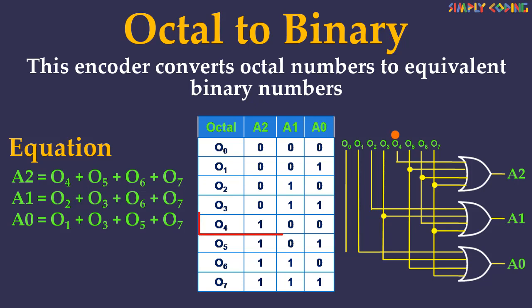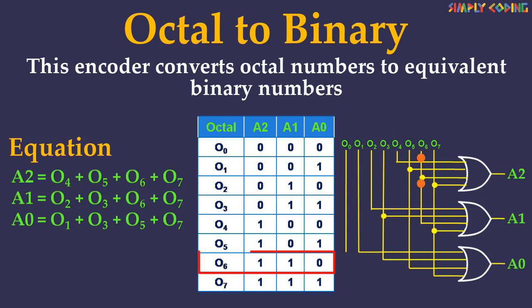For example, in this circuit if we give input as O4 then the output will be 1 0 0. And similarly, when the input is O6, the output is 1 1 0.